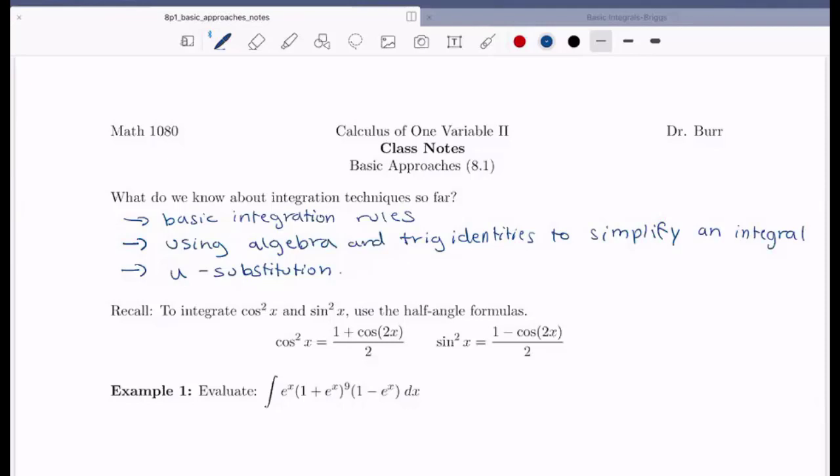One way I remember those two formulas is we notice that they basically have the same form. They're 1 plus or minus this cosine of 2x all over 2. And I just remember that sine is the negative one because sine is like sin and that's bad which is negative.